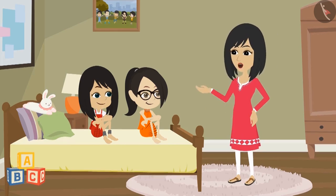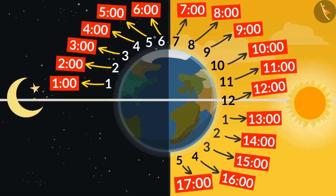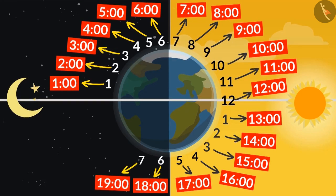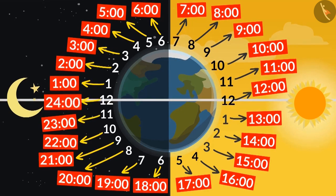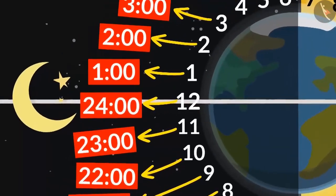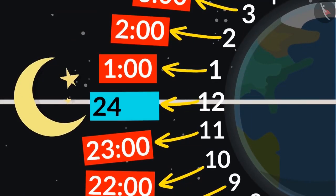Yes! Why don't you try it yourself? Okay, if 5 o'clock in the evening is 17, then 6 will be 18, 7 will be 19, then 20, 21, 22, 23, 24 — that is, 12 o'clock at night will be written as 24:00.